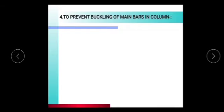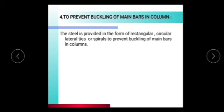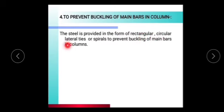The next function of reinforcement is to prevent buckling of main bars in columns. The steel is provided in the form of rectangular, circular, lateral ties, or spiral to prevent buckling of main bars in columns.